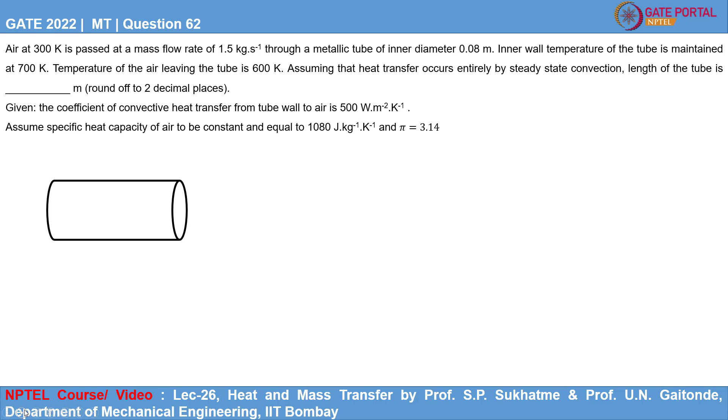Gate 2022 Metallurgical Engineering Question 62. Air at 300 Kelvin is passed at a mass flow rate of 1.5 kg per second through a metallic tube of inner diameter 0.08 meter.